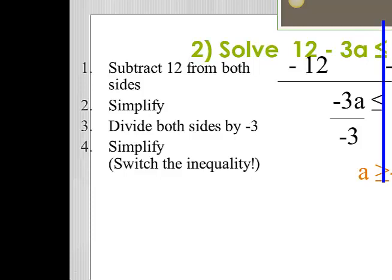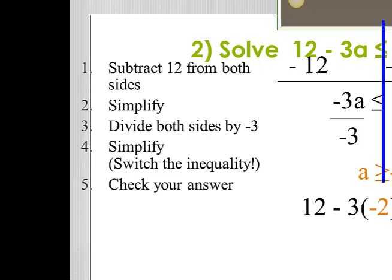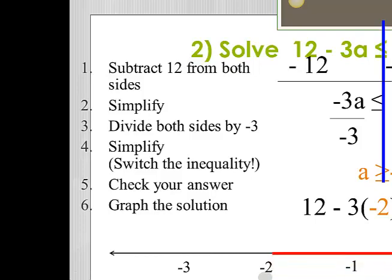Let's do the check first. In order to do the check, I'm just going to set each side of the inequality equal to one another. So that's going to look like 12 minus 3 times negative 2 equals 18. Negative 3 times negative 2 is 6, and 12 plus 6 does equal 18, so that checks out great. Now I need to graph my answer. I'm going to use a number line with the numbers negative 3, negative 2, and negative 1. I'm going to put a closed circle on negative 2 and shade to the right.